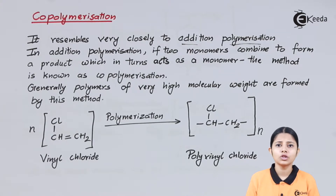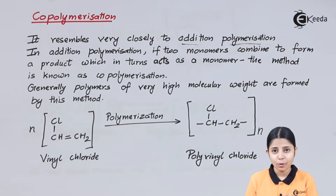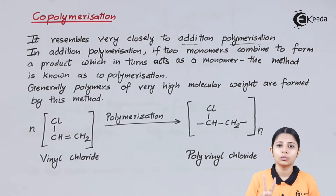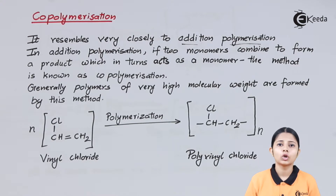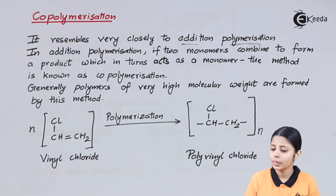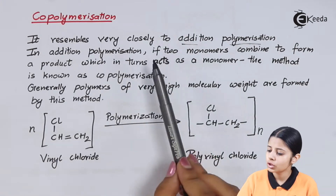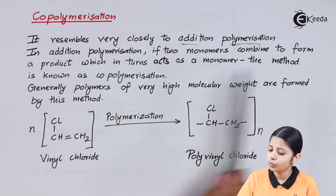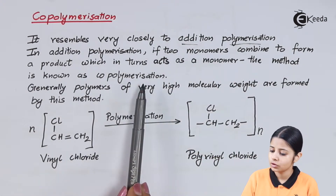What is the difference between addition polymerization and copolymerization? Copolymerization is a type of addition polymerization, but it will have two different monomers — monomers that do not belong to the same kind. They belong to different elements and have different properties, but these two different monomers come together, club together, and form the polymer. Generally, polymers of very high molecular weight are formed by this method.